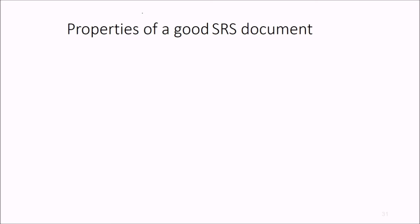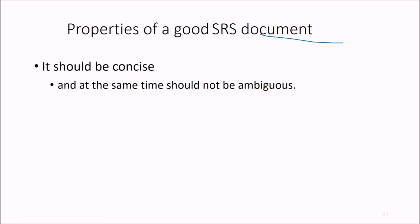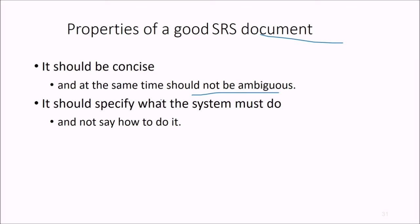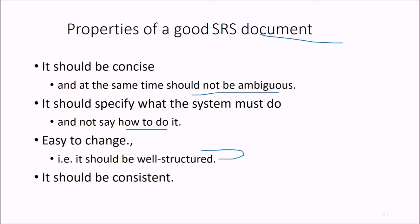What is the property of a good SRS document now? First, it should be concise. At the same time it should not be ambiguous, so neither ambiguous but concise. So it should specify what the system must do but not really how to do it. Easy to change, that means if it is well structured it can be changed, and consistent, no inconsistency is acceptable. Complete, of course, all requirements should be there.